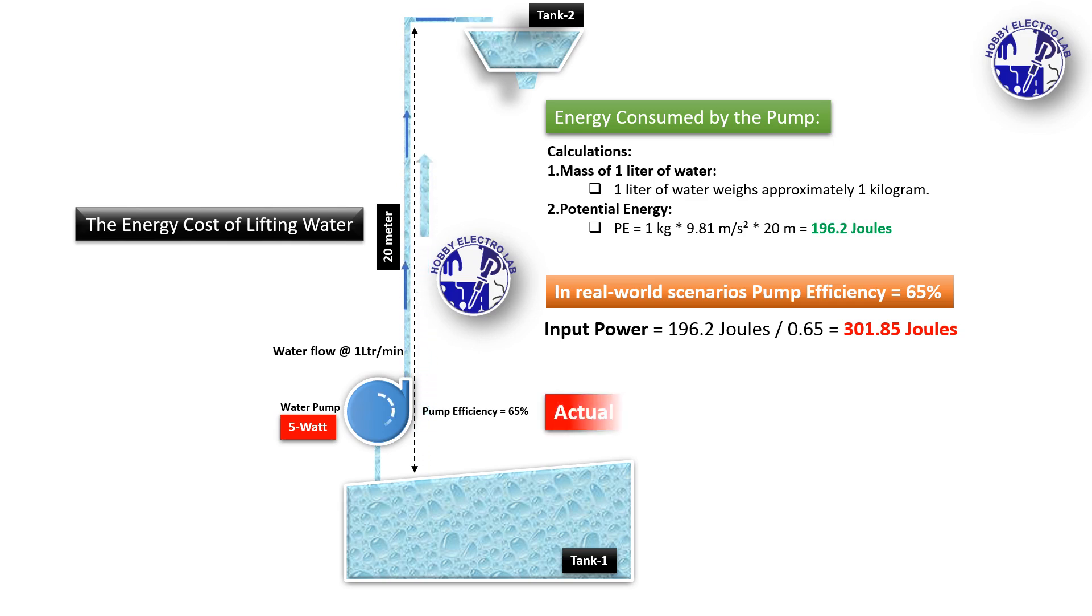Therefore, you would need a pump with a power rating of approximately 5 watts to lift 1 liter of water to a height of 20 meters in 1 minute, considering the pump's 65% efficiency.